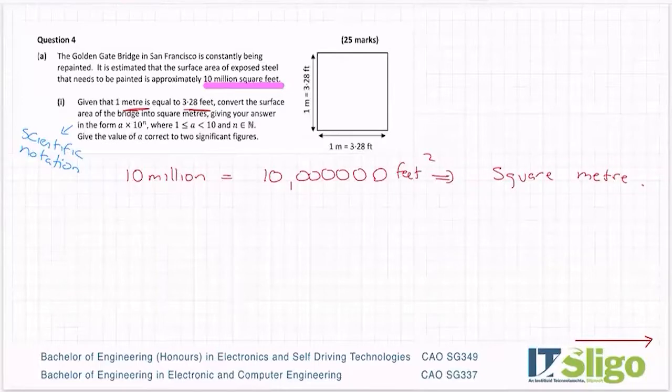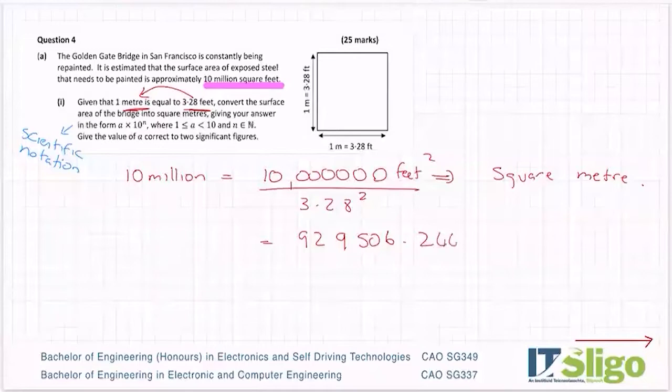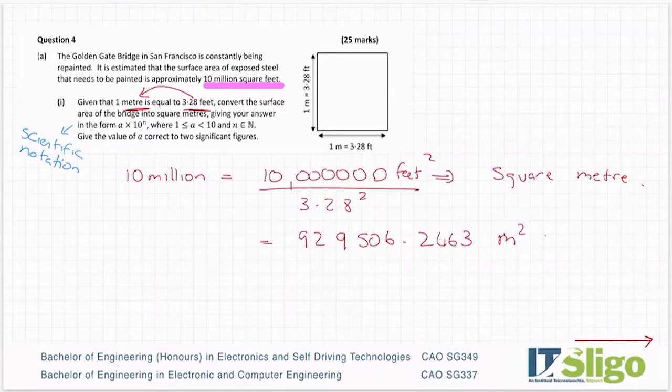And I have to change him to square metres. So now I'm going from feet to metres. So I divide by 3.28 squared. So 10, 1, 2, 3, 4, 5, 6 in my calculator divided by 3.28 squared. And I get 929506.2463 metres squared. So that's a perfectly acceptable answer. I have converted 10 million square feet to metres squared.